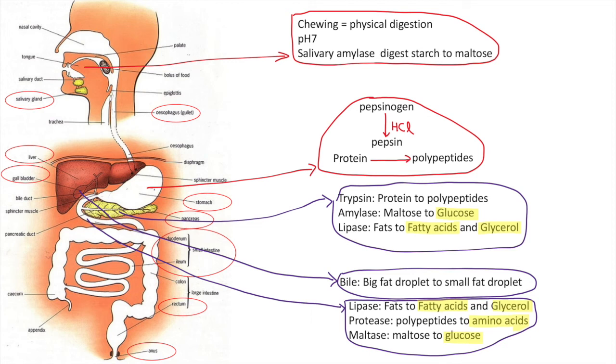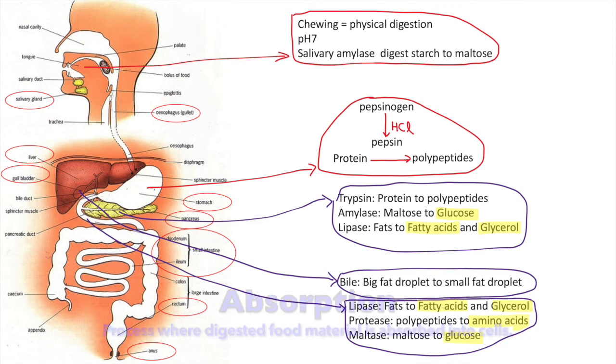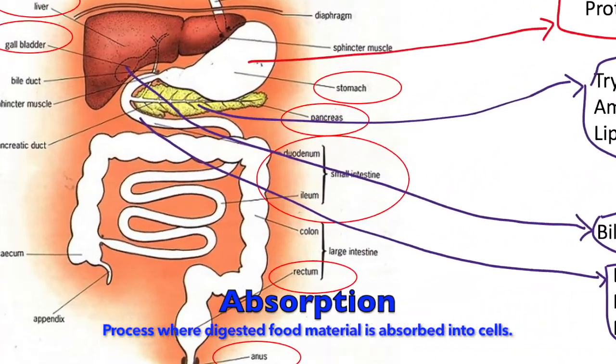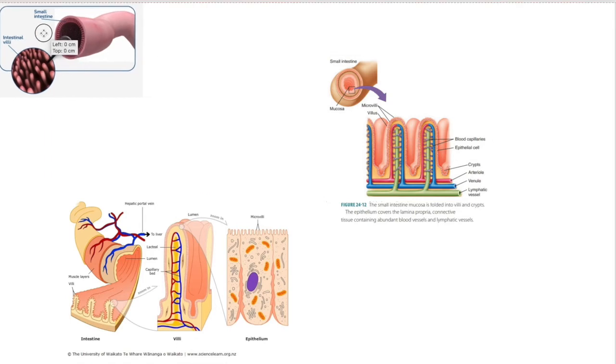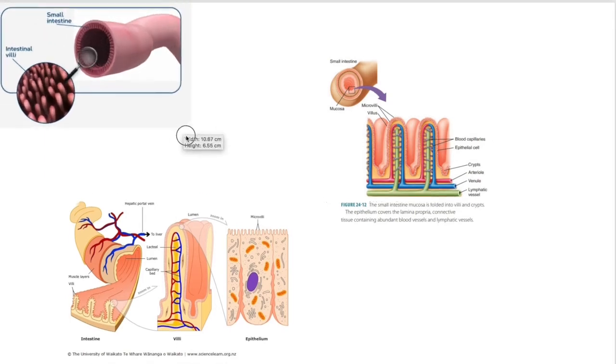Next, we go on to absorption, the process where digested food material is absorbed into body cells. The absorption process starts in the small intestine. It's designed with adaptation in biology so that it helps it do its job well.